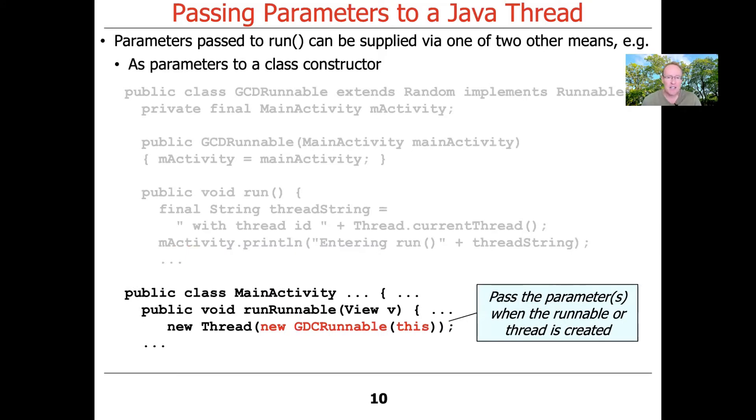Here's the main activity itself. This is the run runnable method, which is connected to the button that we would push if we want to run the runnable implementation of the GCD example. And you can see what it does when run runnable is called and it's called when the button is pushed by the user.